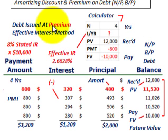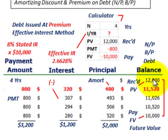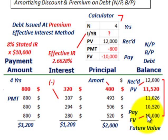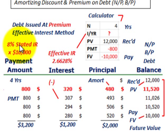We're first going to look at where debt is issued at a premium. In this case, the present value of a loan or notes payable we're going to take out is $12,000. Then four years later, we're going to have to pay back $10,000. So we've received $12,000 as the present value, and the future value is $10,000. This note has an 8% stated rate of interest, which has to be paid yearly — so a $10,000 note at 8% gives us an annual interest payment of $800.